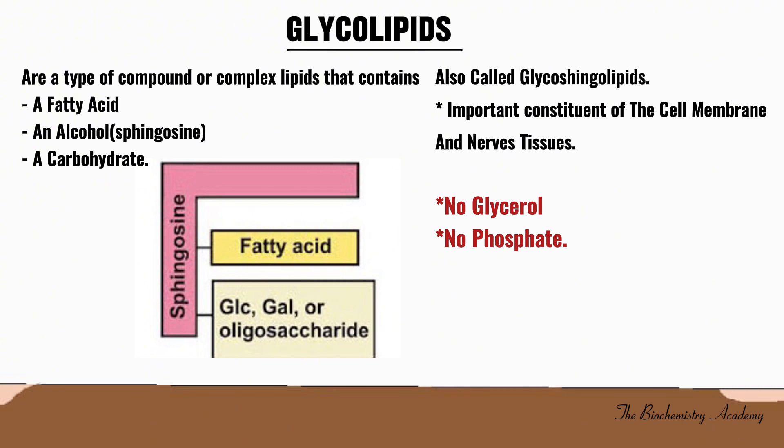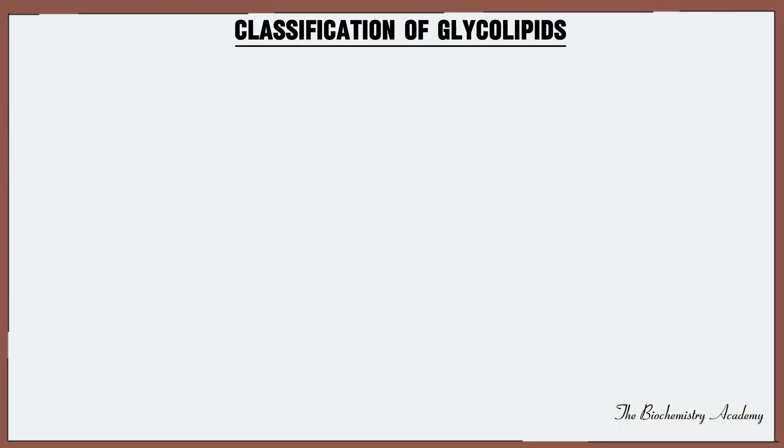In the structure of a glycolipid, they do not contain any glycerol, neither do they contain any phosphate. Therefore, glycolipids consist of sphingosine, a fatty acid, and a carbohydrate — and this carbohydrate can be a sugar.